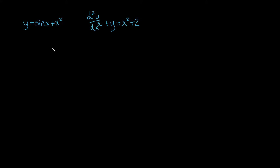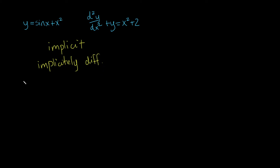If the function is implicit, then what we have to do is actually implicitly differentiate the function and see if we can get back to the differential equation we started with. Now, if our function is explicit, we don't really care about that. What you can do is just plug the function in, because we could fairly easily calculate y's first derivative and y's second derivative, substitute it all into the differential equation, and just check that it works.